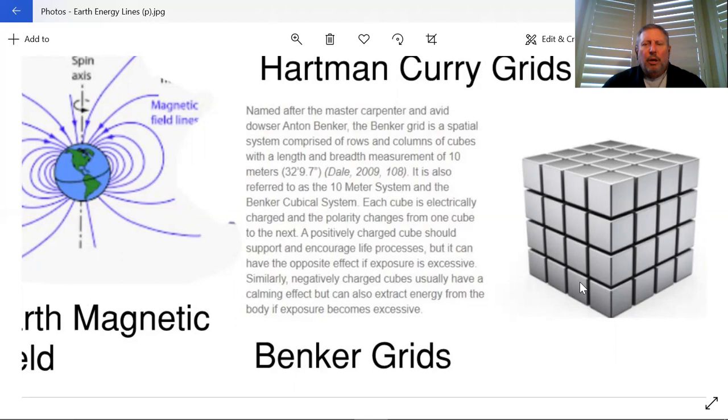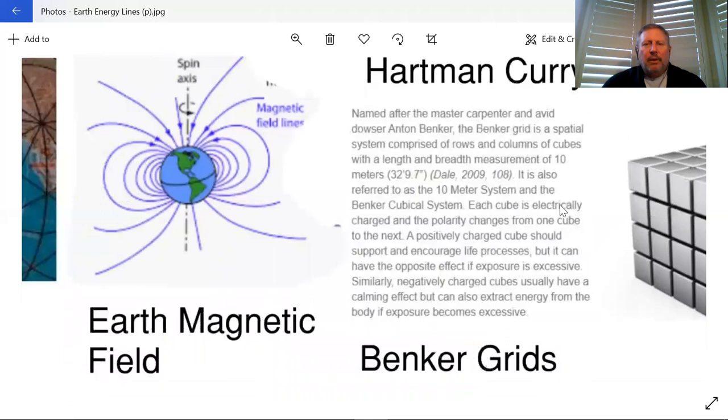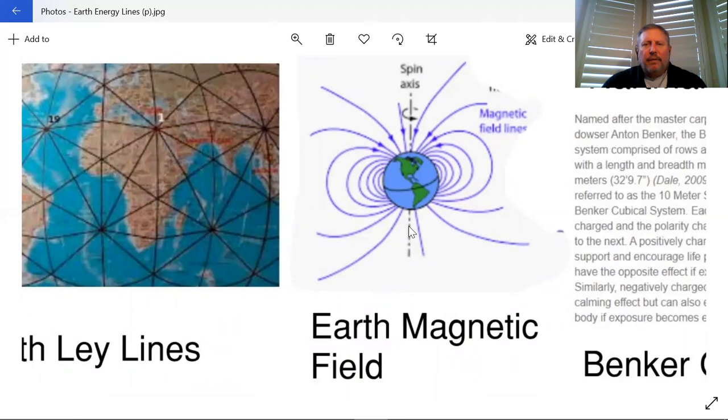Right now we have the Hartman-Curry grids, we have the Benker grid. We also can show here we have the electromagnetic field of the earth, which some say is almost like the human biofield with this being the heart. We'll talk about that in another video, of the biofield and biofield tuning.